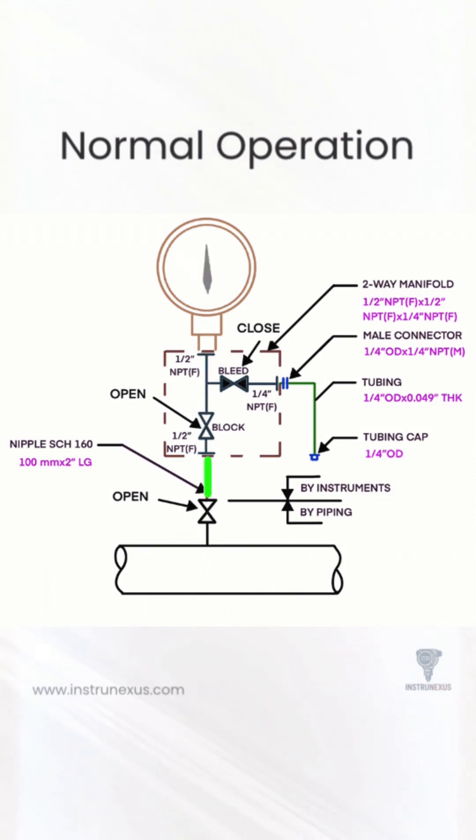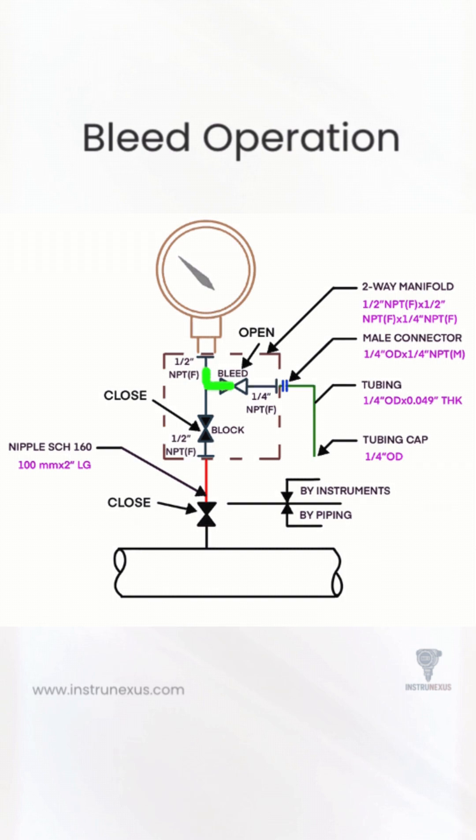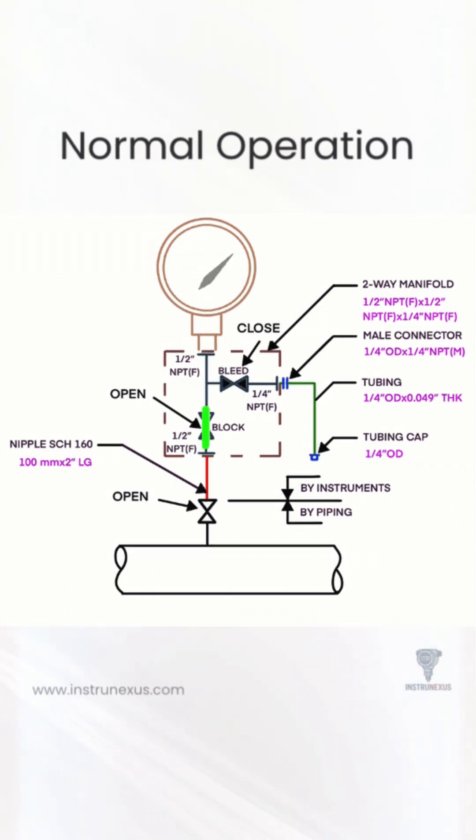Next, the two-way manifold includes a block valve and a bleed valve. The block valve isolates the pressure gauge from the process. The bleed valve releases trapped pressure before removing the gauge for calibration or replacement.